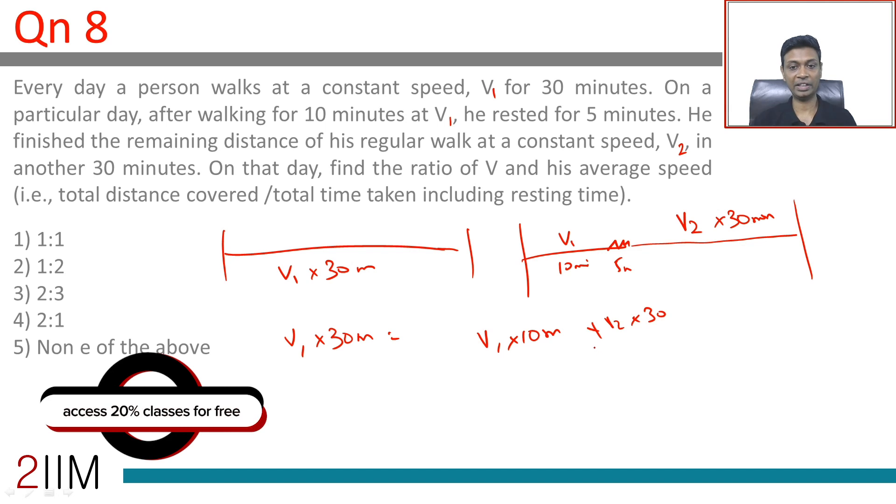On that day, find the ratio of v2 to his average speed. The total distance is covered by total time - not just v, it is v1 and v2, remember that.